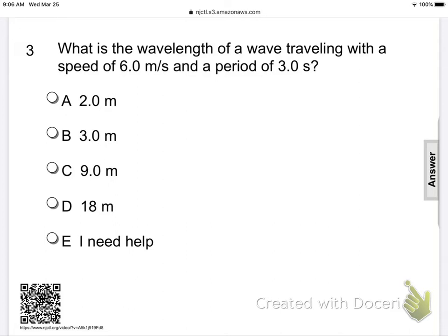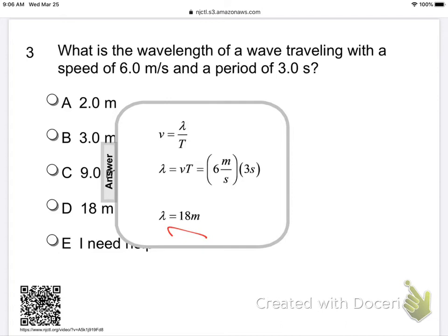What's the wavelength of a wave traveling with a speed of 6 meters per second and a period? We have velocity equals lambda f, or velocity equals lambda over T. Solving for wavelength, we can multiply both sides by period, and we get wavelength equals VT, plugging in our values, 18 meters.